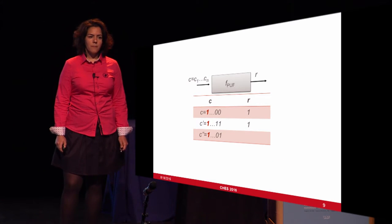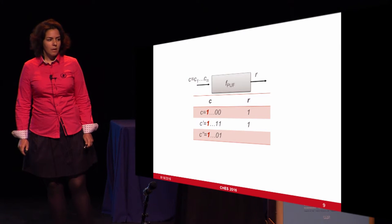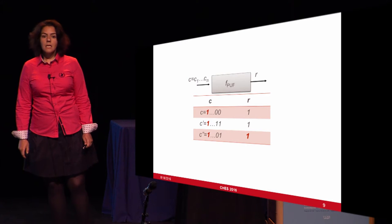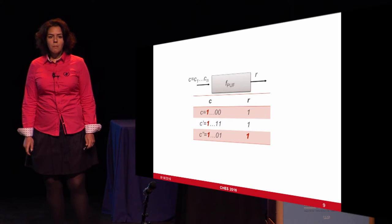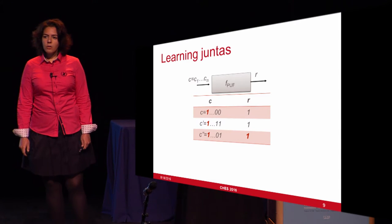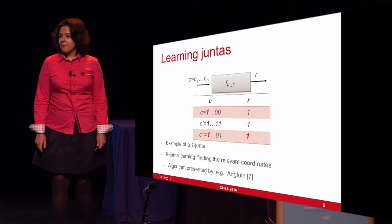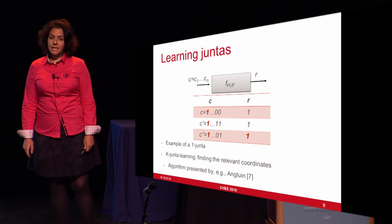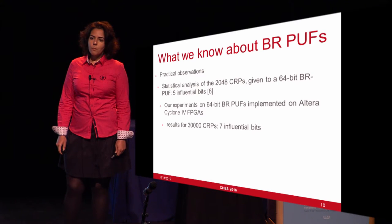Let's look at an example. Assume we know the first bit position is influential — meaning if the first position is set to one, the response of the PUF is always one, so we can predict the response to a new challenge. If we don't know which bit position is influential, this problem is well-studied in machine learning theory and is called learning juntas. A junta is a Boolean function whose response is determined by a set of bit positions.